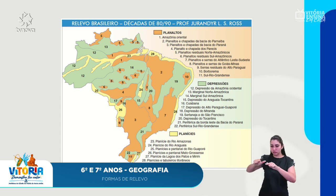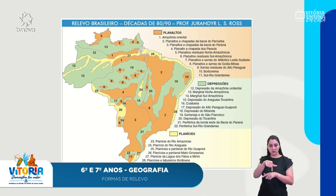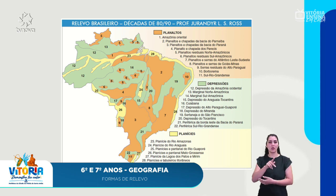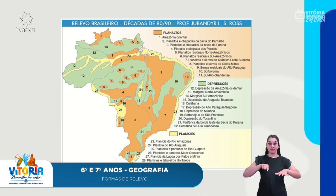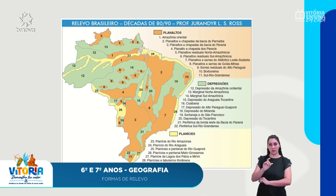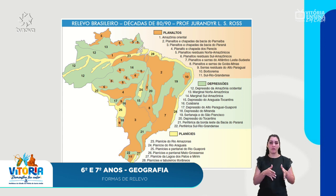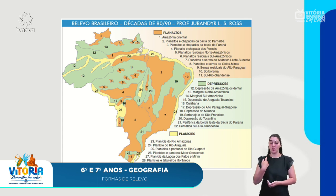As áreas laranjas no mapa são áreas de planalto, com destaque para o planalto da bacia do Parnaíba, o da bacia do Paraná e o planalto e Serra do Atlântico Leste e Sudeste. Esses planaltos possuem uma rede hidrográfica bastante grande. Os rios de planalto são interessantes porque o desnível — quando o rio cai da área mais alta para a planície — é aproveitado para a construção de usinas hidrelétricas, usando a energia potencial da queda d'água.